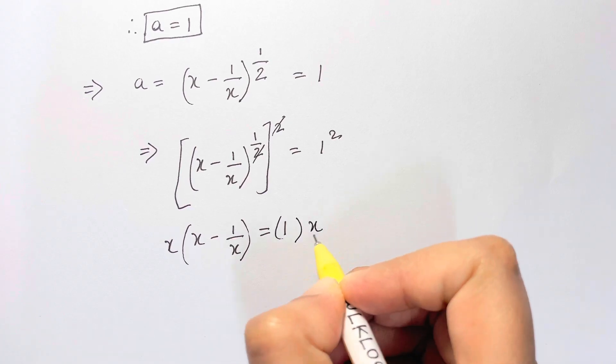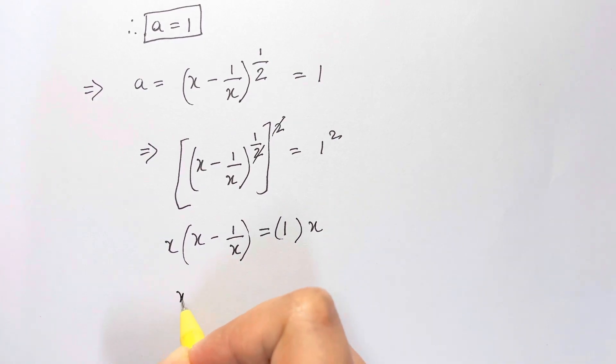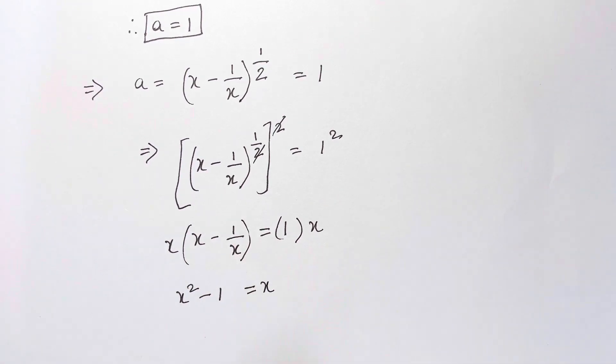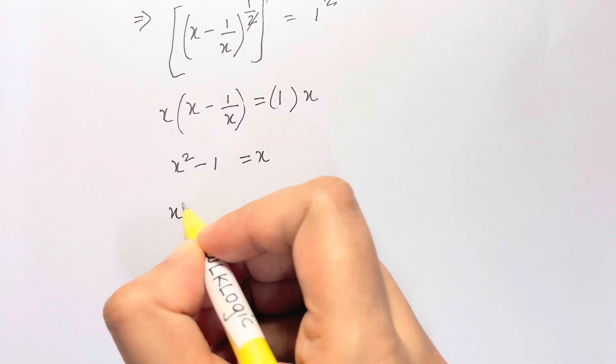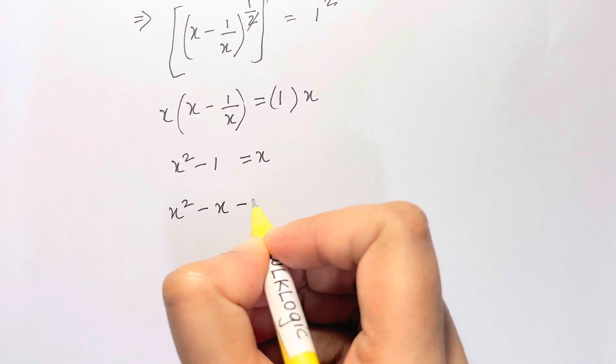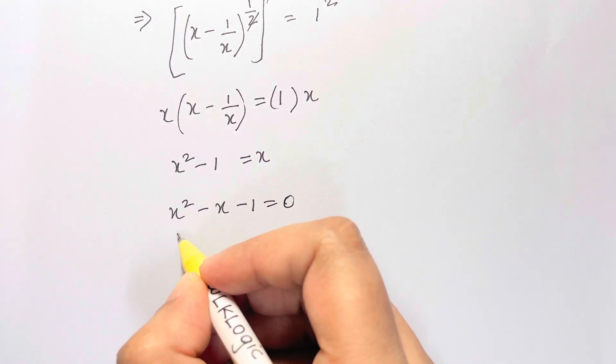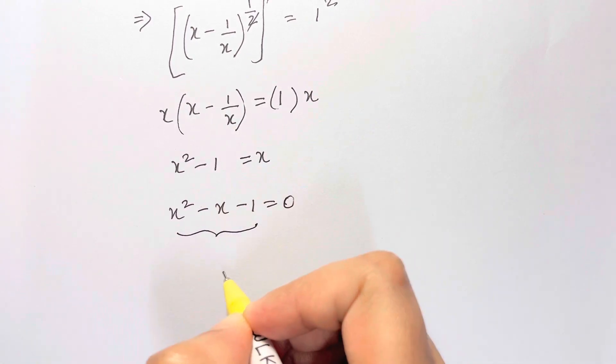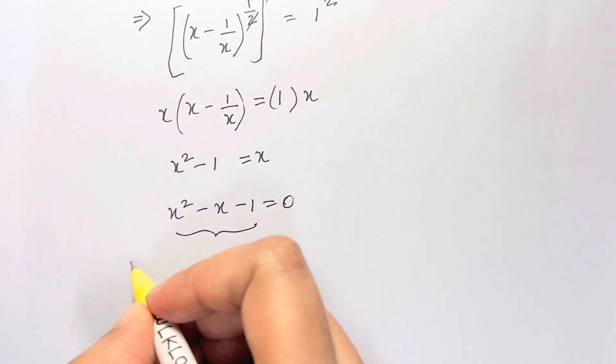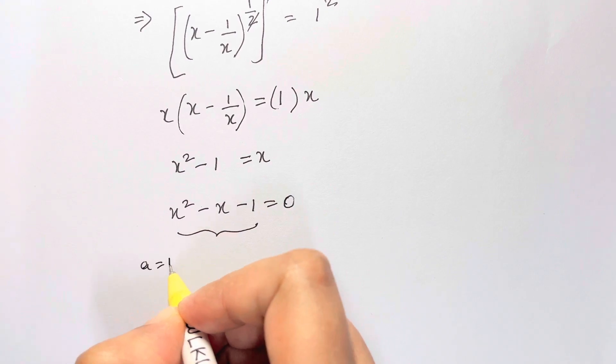Multiplying both sides by x, we get x squared minus 1 equals x. Bringing all terms to one side: x squared minus x minus 1 equals 0. This is a quadratic equation, so let's solve it using the quadratic formula.